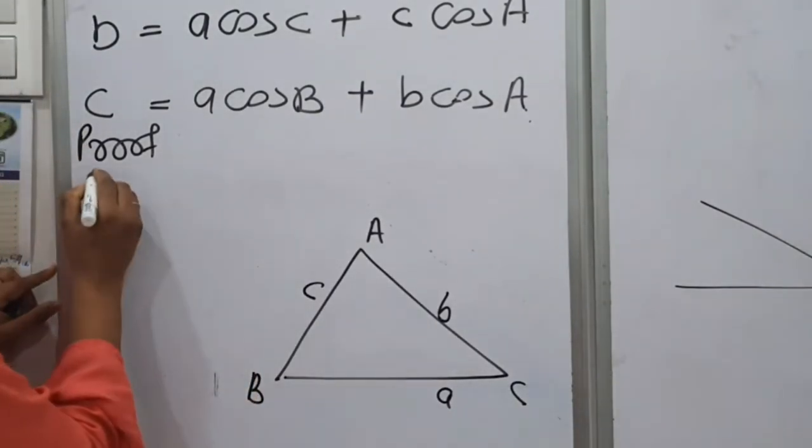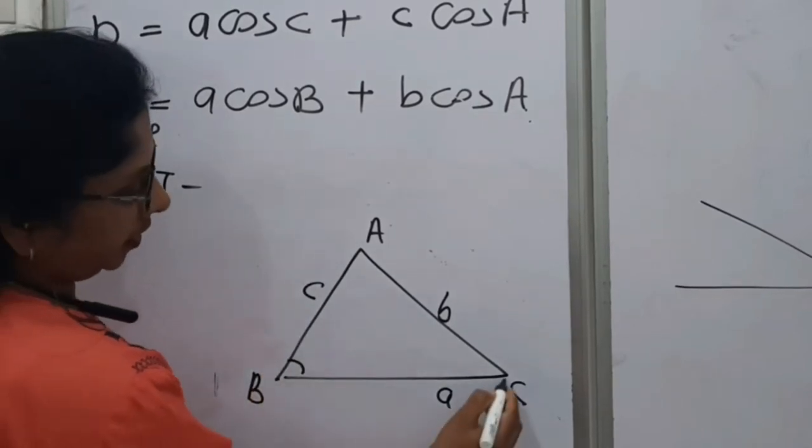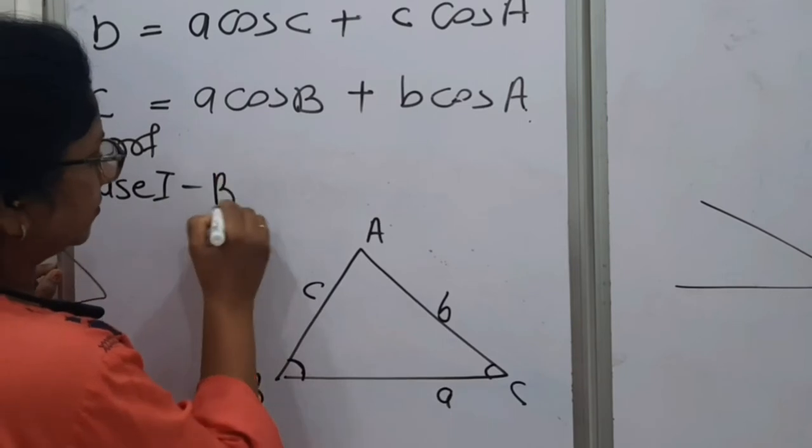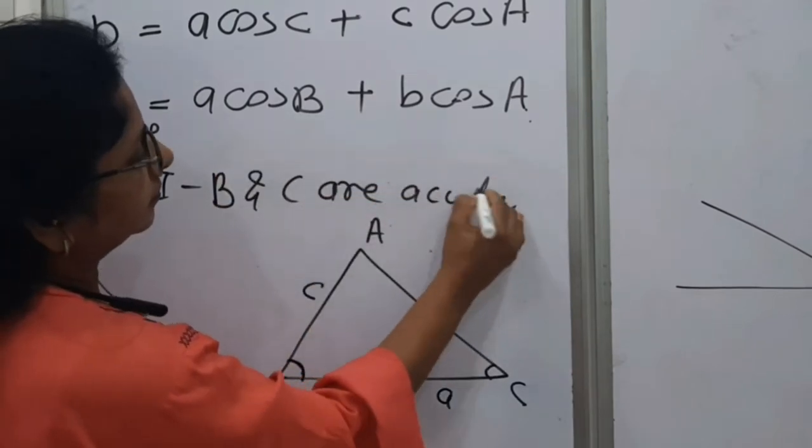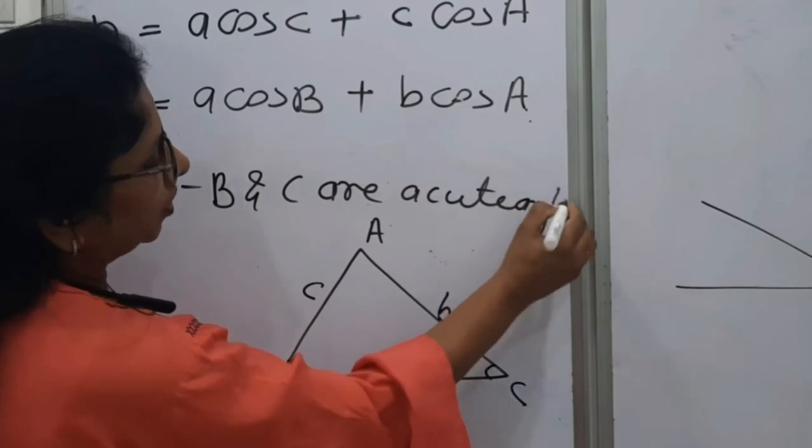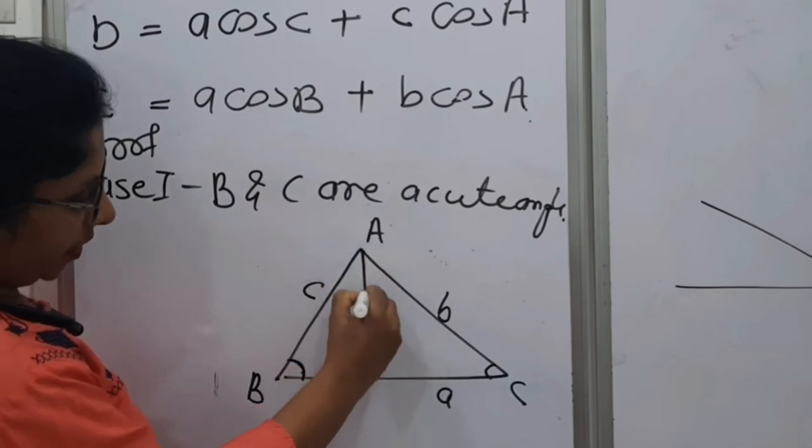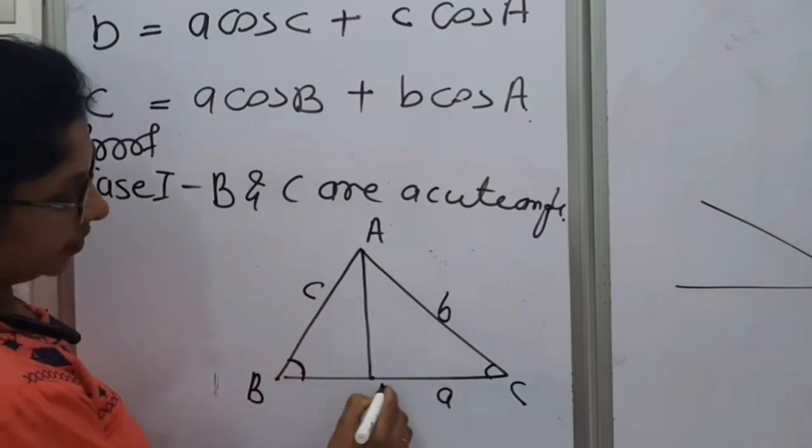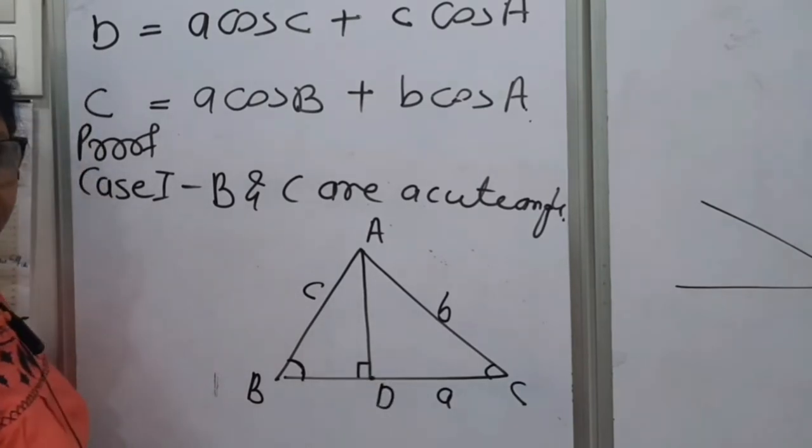So very first case is if this B and this C both are acute angles. So to prove this case, we will draw an altitude from A on BC, which will meet this BC at D. This is an altitude. It means this is 90 degrees.